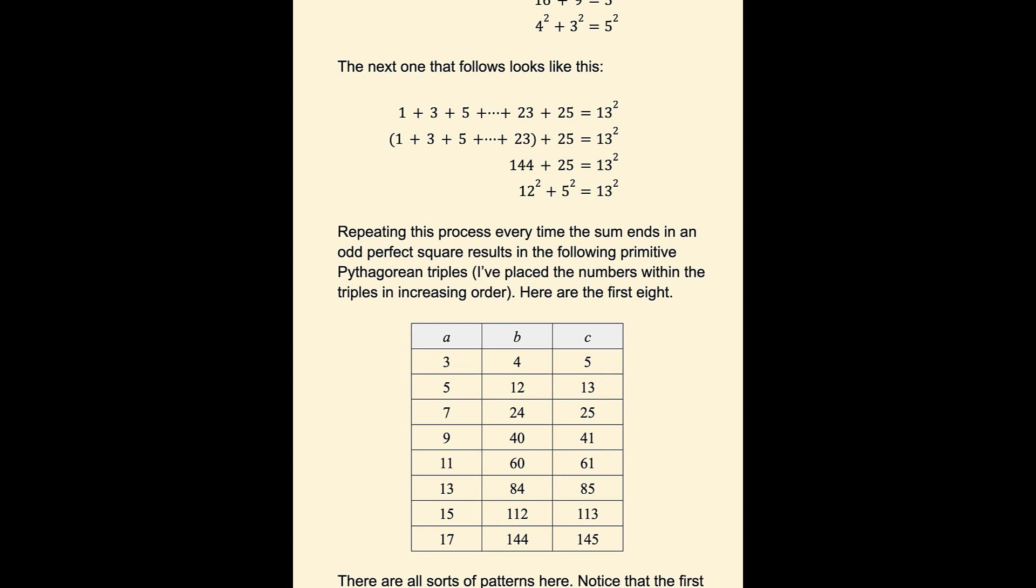And repeating this process every time the sum ends in an odd perfect square results in the following Pythagorean triples. I've placed the numbers within the triples in increasing order, because that's the way we're more likely to say them. And here are the first 8.